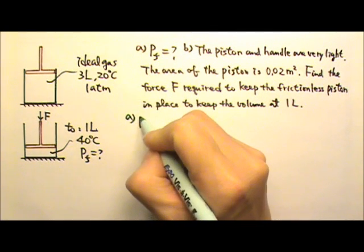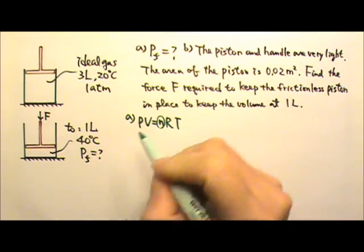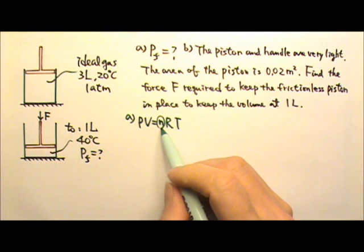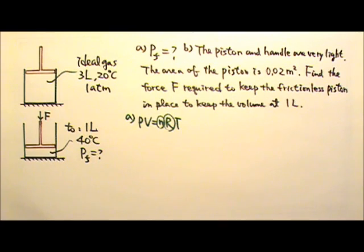For part A, we can use PV equals NRT, the ideal gas law. Because it's a closed system, the number of moles doesn't change. The gas constant R is of course a constant.